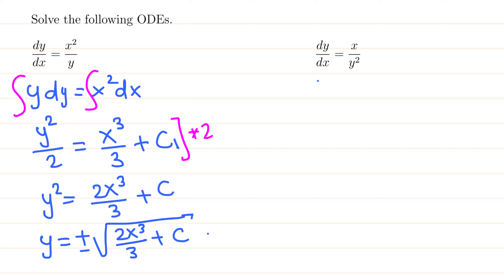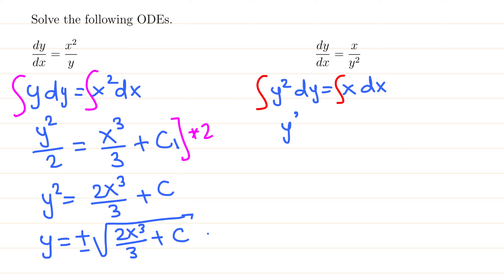For the second ODE, same approach — write it in differential form, separate the variables by cross multiplying, then integrate both sides. Integrating y squared gives y cubed over 3, and integrating x gives x squared over 2, plus a constant c.